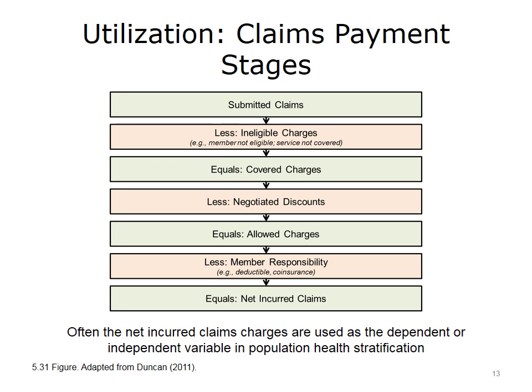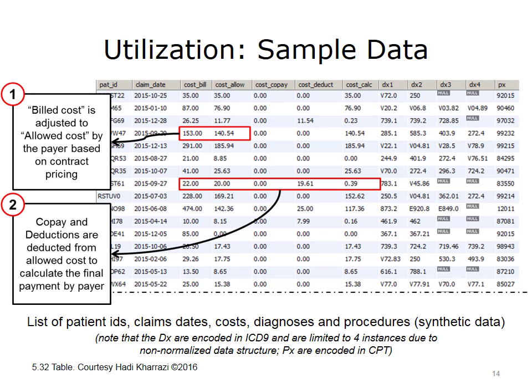This diagram depicts the stages that a claims payment goes through before the final net cost is calculated. A claims data source may include utilization and cost for each type of the stages or only one of them. Population health analysts should be aware of the type of cost that is being used for predictive modeling. This table shows a sample list of patients and their partial claims records, based on synthetic data. The claims data include the claims date, billed cost, allowed cost, co-pay amount, deducted amount, calculated cost, up to four diagnoses, and one procedure.